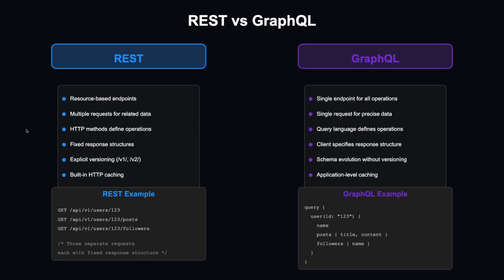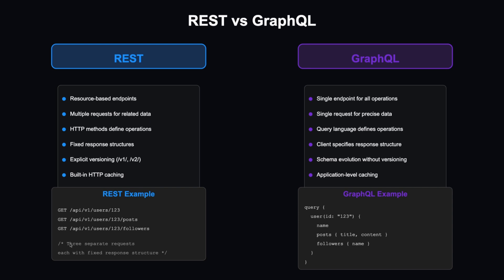REST uses resource-based endpoints — for example, a users endpoint, a followers endpoint, or a posts endpoint. Sometimes you need to make multiple requests to get related data: user details, user posts, and followers would each require a separate request, totaling three requests. HTTP methods define the operations, such as GET.